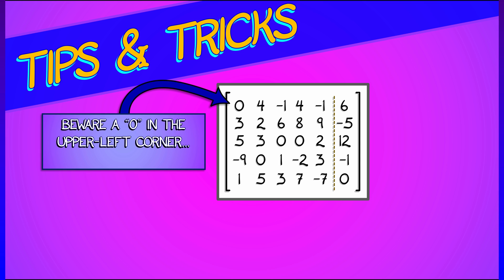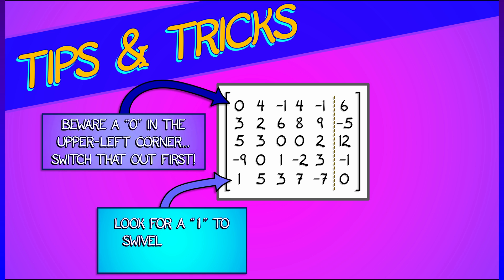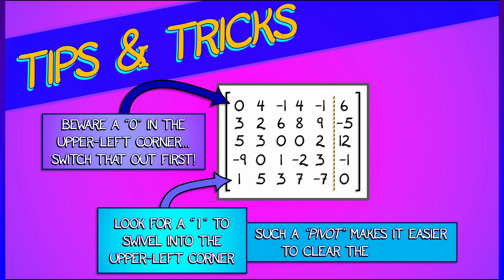So if you see an augmented matrix like this, beware a zero in the upper left hand corner. That will make your life miserable. You've got to switch that out right away. In fact, what you really would like to put in that upper left hand corner is a one, because then it's going to make it really easy to clear out everything in the column below it with type three operations.